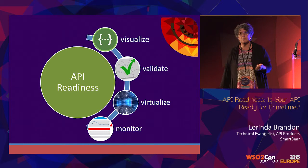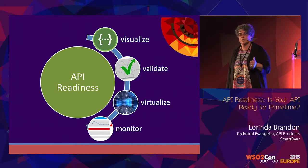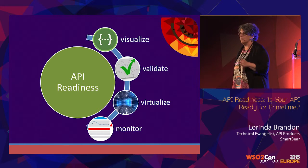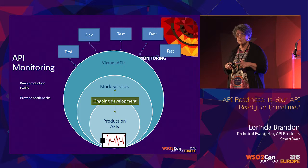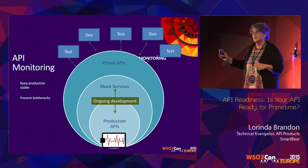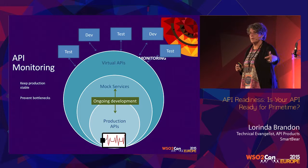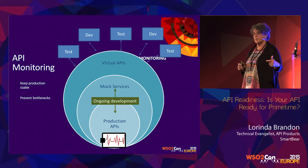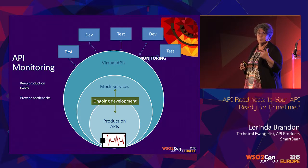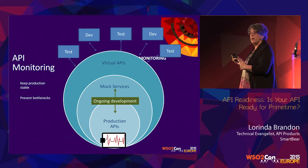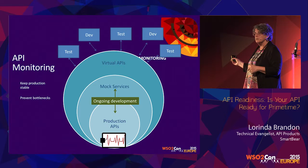And lastly, you want to make sure you're doing your monitoring. Monitoring protects your production API — you can keep an eye on performance and make sure it's staying in the SLA region you've defined or that your partners expect. Monitoring isn't just for your own APIs: if you're relying on a third-party API, you should monitor that as well. You don't want to find out from your users that an API you're relying on is down or too slow.